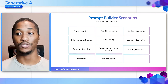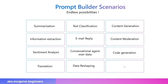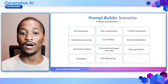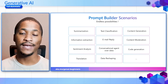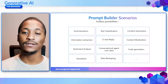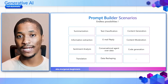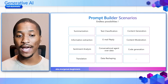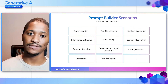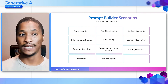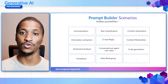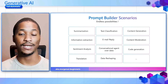Let's look at some scenarios available with the Prompt Builder. You have summarization — the most famous one — where you can summarize text from an email. You also have text classification, content generation and email reply where Generative AI helps you draft a reply instead of composing it from scratch, sentiment analysis to check sentiment within a specific text or input, and translation and code generation.